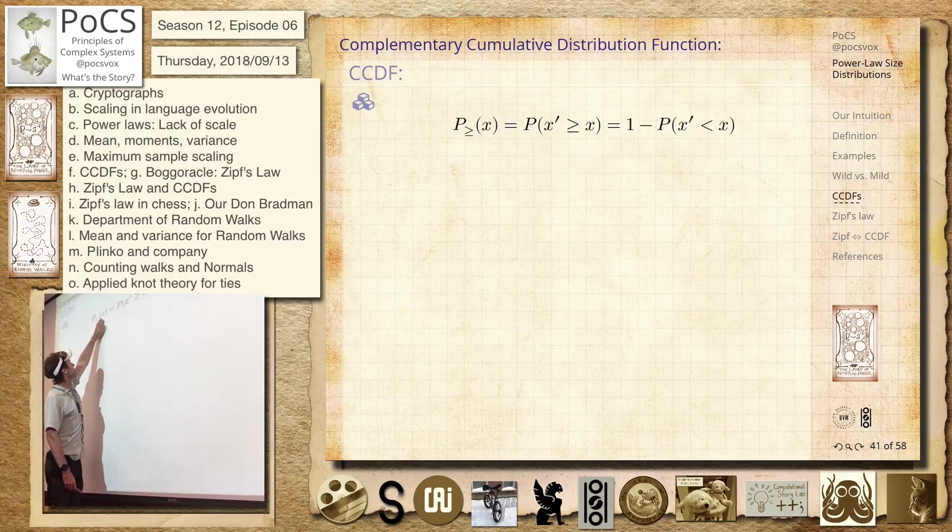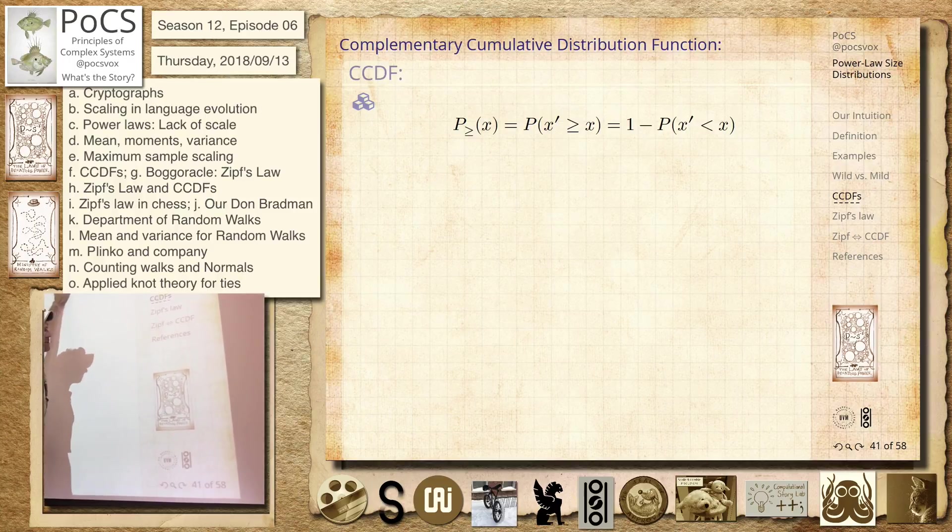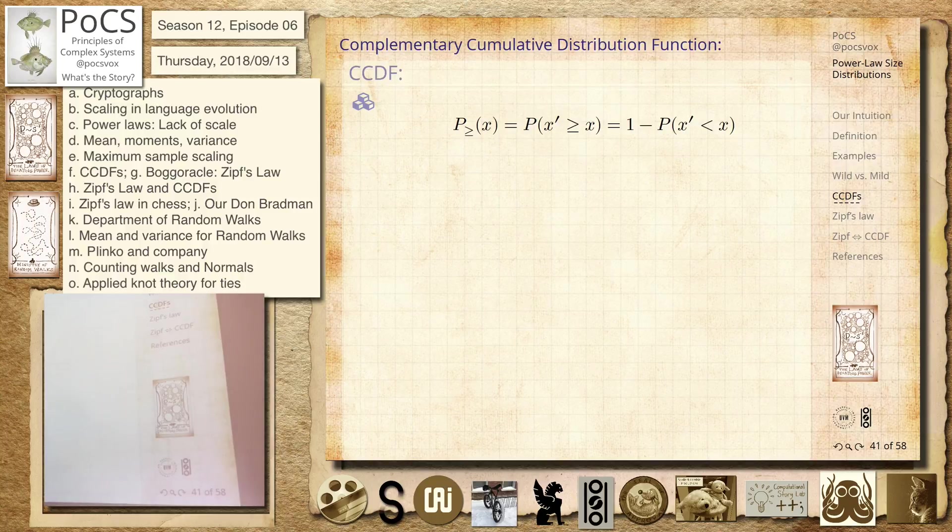So this is a probability that your sample is greater than x, at least equal to x. And you can write it like this if you want. It's 1 minus the cumulative distribution. So this is a standard thing in statistics. This is what we'll call a complementary cumulative distribution, sometimes called the exceedance probability.